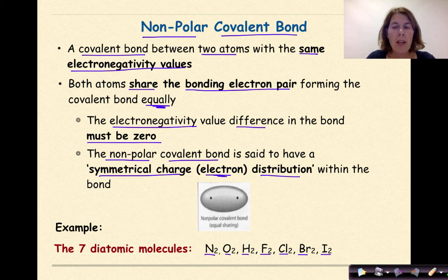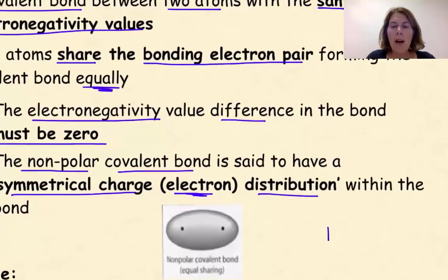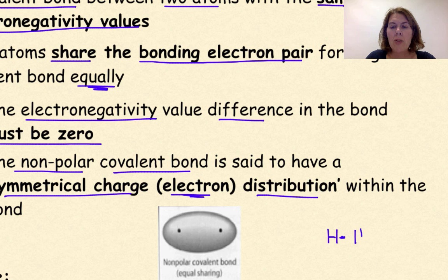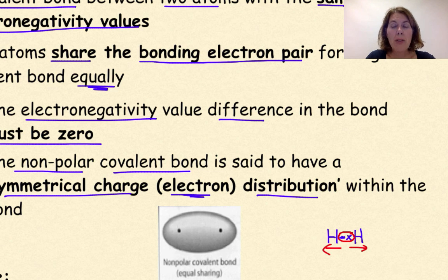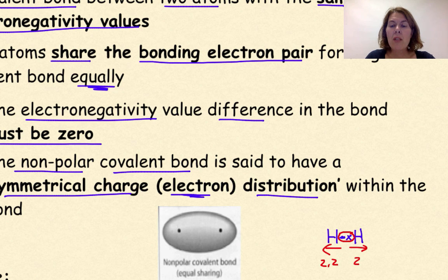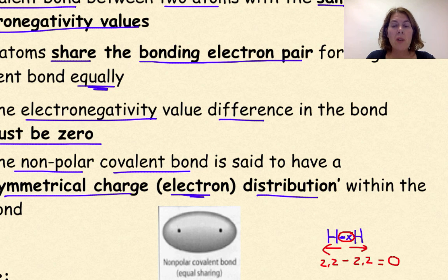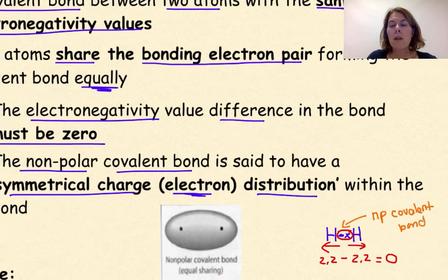For example, in H₂: hydrogen has one valence electron, so each hydrogen contributes one valence electron, and those two electrons are shared equally with an equal pull in both directions. Hydrogen has an electronegativity value of 2.2 — subtracting 2.2 from 2.2 gives a difference of zero, so this bond is classified as a nonpolar covalent bond.